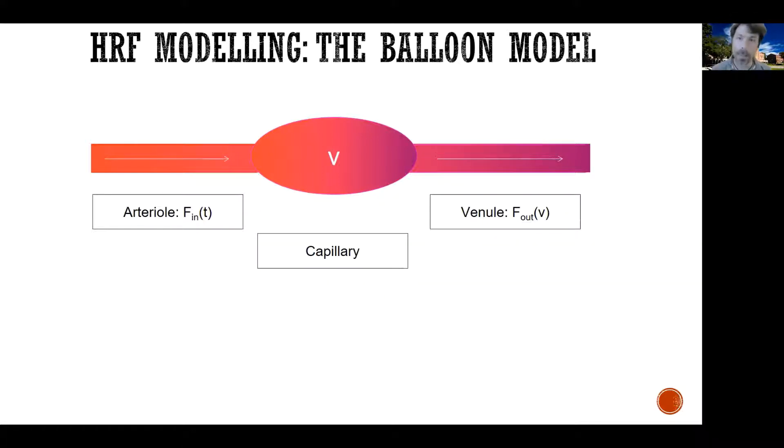In other words, if you stimulate a neuron, what is the shape of the vascular response and therefore what is the shape of the expected BOLD response? Now, the current theory about how neural events turn into certain dynamics of vascular response is known as the balloon model, and it goes as follows.